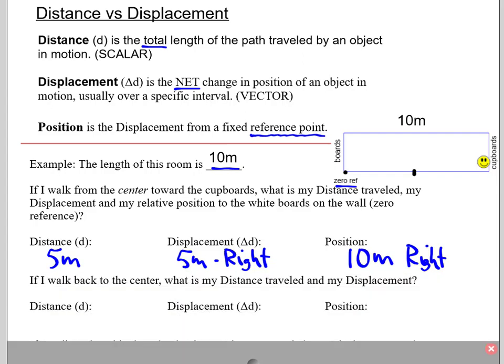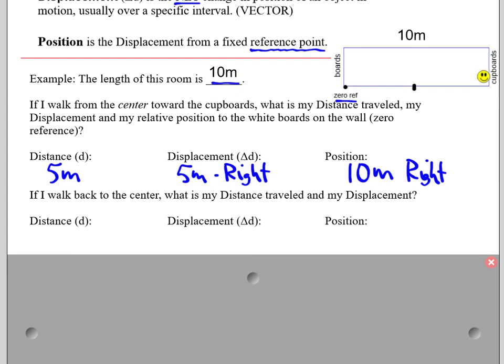So now, if I walk back to the center, what is the distance traveled and my displacement? Well, the distance traveled now becomes 10 meters, because I've gone there and back, so I can add those two together. My displacement is the net change from where I started. Well, I started at the center, and at this point in time, I'm finishing at the center, so I have a displacement of 0 meters. And lastly, my position would be now 5 meters to the right.